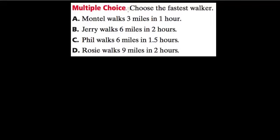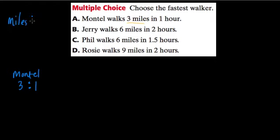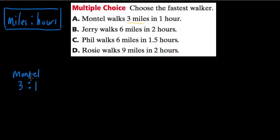Welcome. In this problem we're told to choose the fastest walker, and we're given four choices. We have Montel who walks three miles in one hour, so we can set that ratio up right away. Montel is a three-to-one ratio — that's miles to hours. We have to establish that; we'll use miles first and hours second for all our ratios.